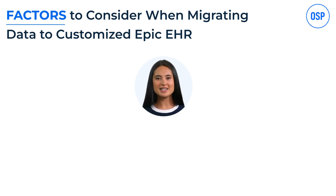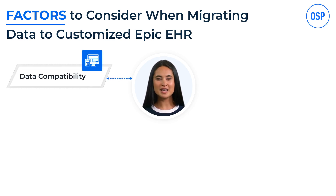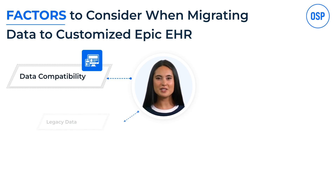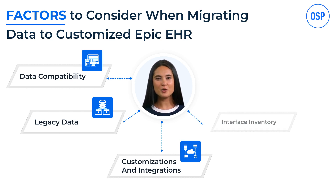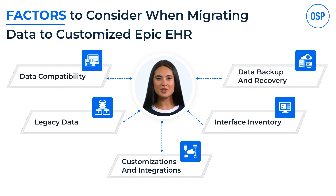Healthcare entities must consider these key factors when migrating data to Epic EHR: first, data compatibility — ensuring transfer without any data loss; second, ensuring legacy data is accurate and suitable for migration; third, customizations and integrations — modifications required by the Epic EHR system per the organization's needs; fourth, interface inventory — taking stock of existing interfaces and designing new ones; and fifth, data backup and recovery — backing up data before migration in case of loss.